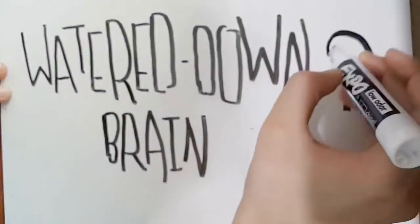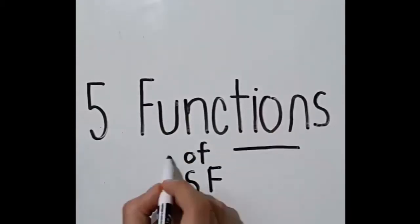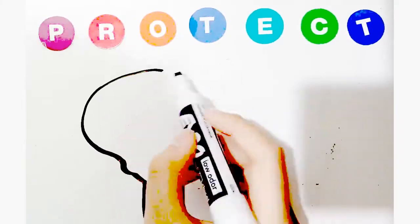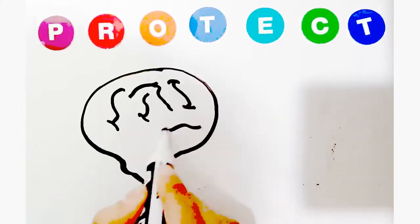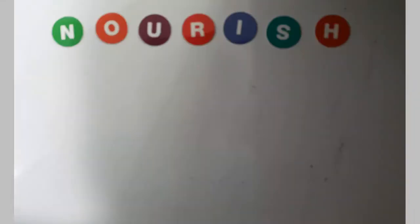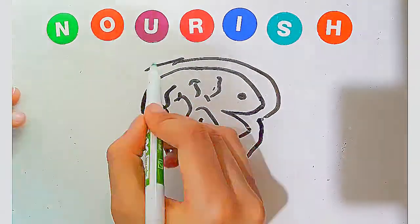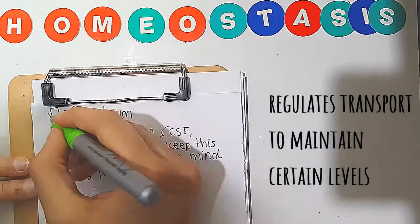You may be asking, what's the point of watering down our brain with the CSF? There are five main functions of CSF. First, it protects our brain by acting as a shock absorber to prevent damage to the brain itself. Second, it nourishes the brain because it is filled with blood-based nutrients. Third, it helps maintain homeostasis by regulating transport across the brain.